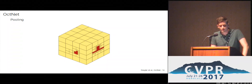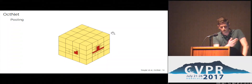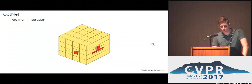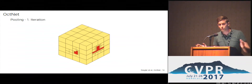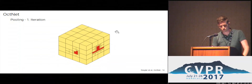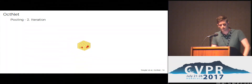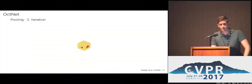Another operation that needs to be defined is pooling. Representations on the larger octree cells are already pooled, so it is only relevant for the smaller octree cells, indicated here in red. We pool them into larger octree cells and then decrease the resolution of the whole octree structure by combining neighboring shallow octrees. In a similar way, we can also implement the unpooling operation needed, for example, in semantic segmentation.